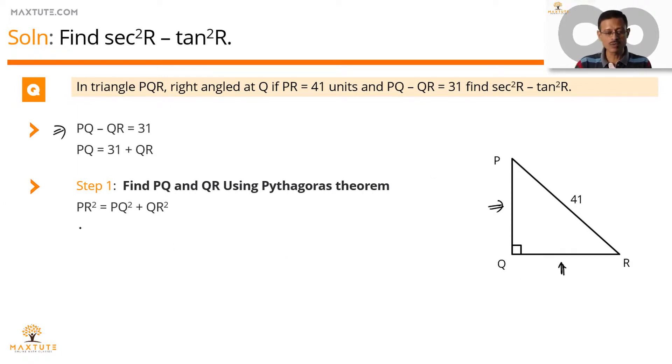Measure of PR is equal to 41, so this is 41 square. Instead of PQ, let's replace it with 31 plus QR. So PQ square becomes 31 plus QR, the whole square, plus QR square.